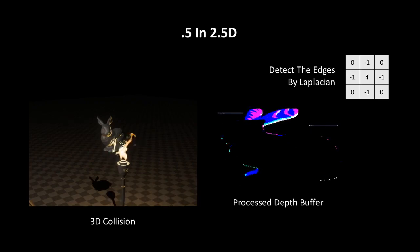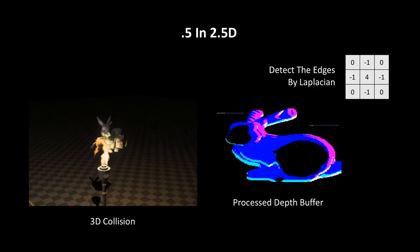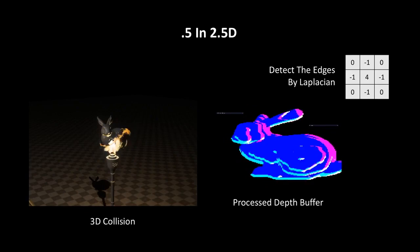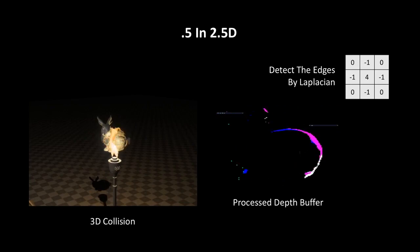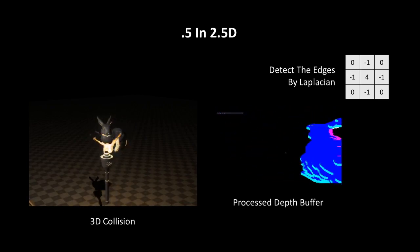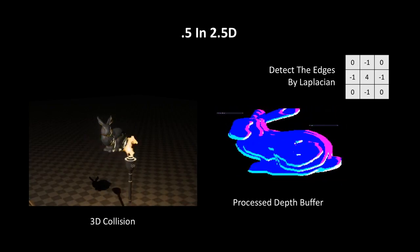We can also collide with 3D objects through depth buffer analysis. To do that, we transform the depth buffer into the screen space and extract the normals by Laplacian edge detection. This method only takes 7 microseconds and is quite accurate.